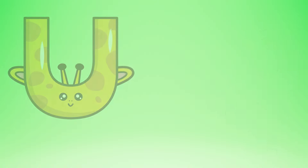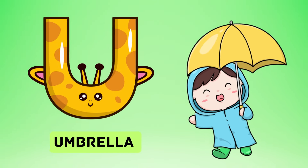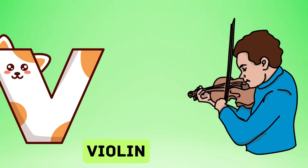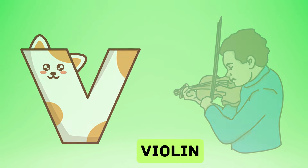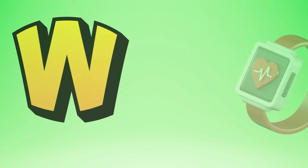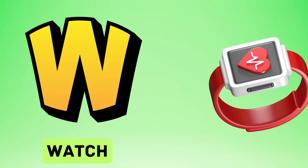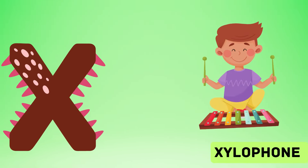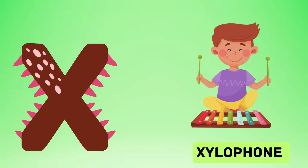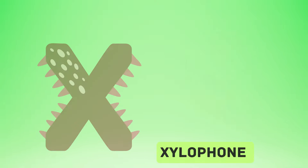U is for umbrella, u-u-umbrella. V is for violin, v-v-violin. W is for watch, w-w-watch. X is for xylophone, x-x-xylophone.